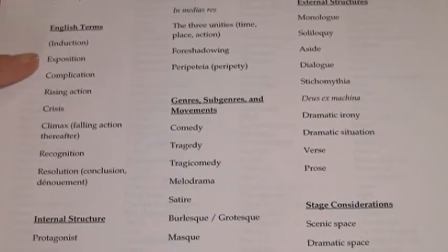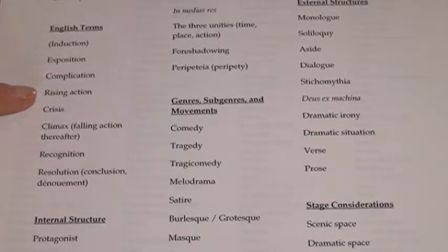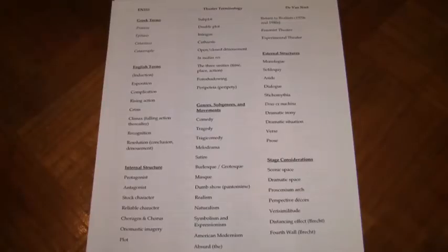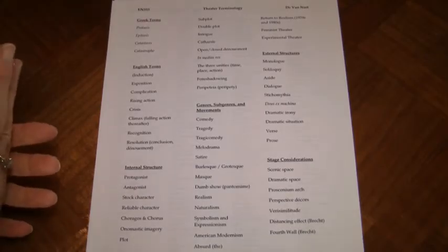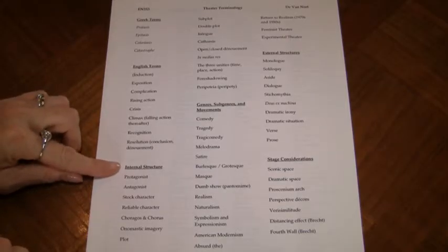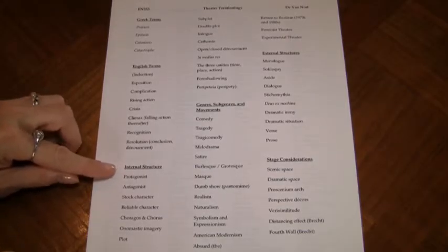Exposition, complication, rising action, crisis, climax, recognition, resolution. There are also some different words that you'll need to be familiar with in order to talk knowledgeably about what's going on within the play. Some of these fall under the title of internal structure — these are the elements that are shaped to make the play work.